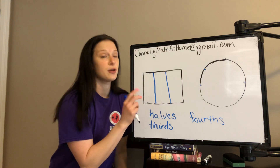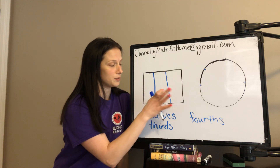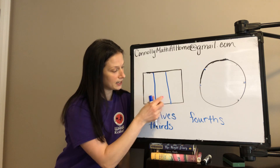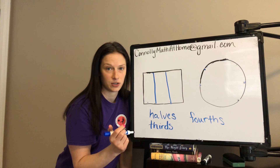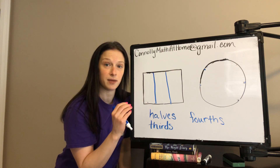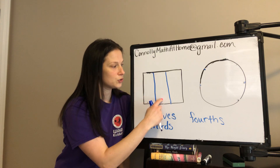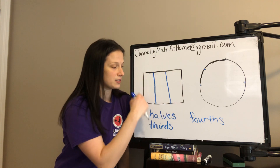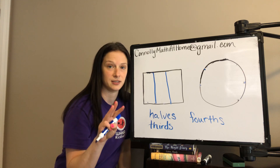When we think about thirds, we're splitting this with one person, two people, three people. Each person is going to get an equal piece, and we call these thirds. So how many thirds does it take to make up the whole thing? One third, two thirds, three thirds. If I split something into thirds, that means I have three equal pieces.